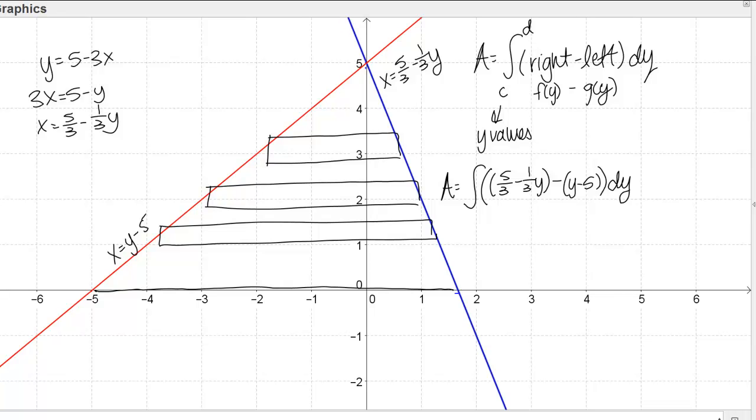Then I want the bounds on my integrals to be y values. I need to think about what y values this region spans. I'm starting down here at y equals 0, that's the bottom bound of my region. Then the top is this point, y equals 5, where these lines meet. My integral then is going to be from y equals 0 to y equals 5.